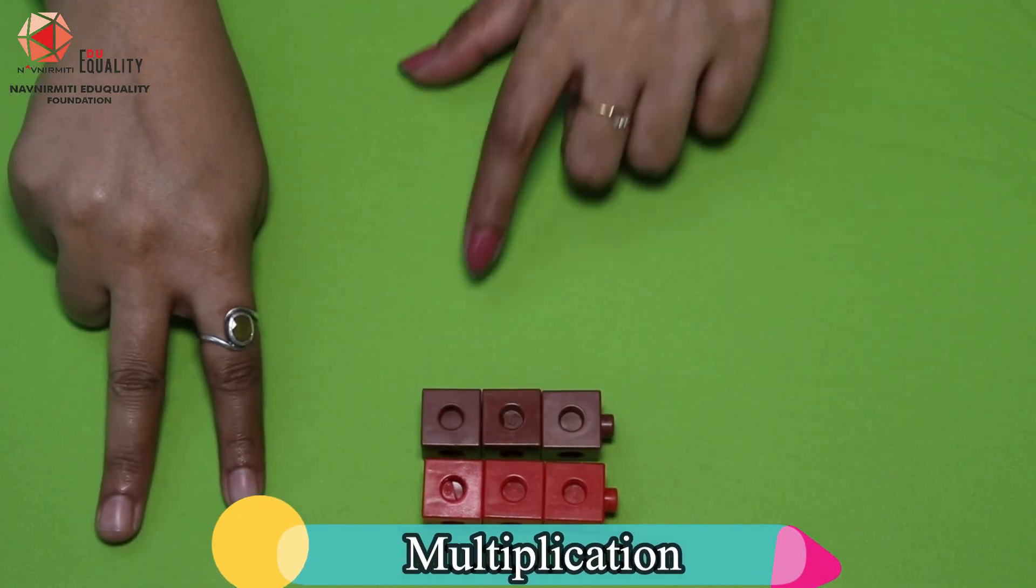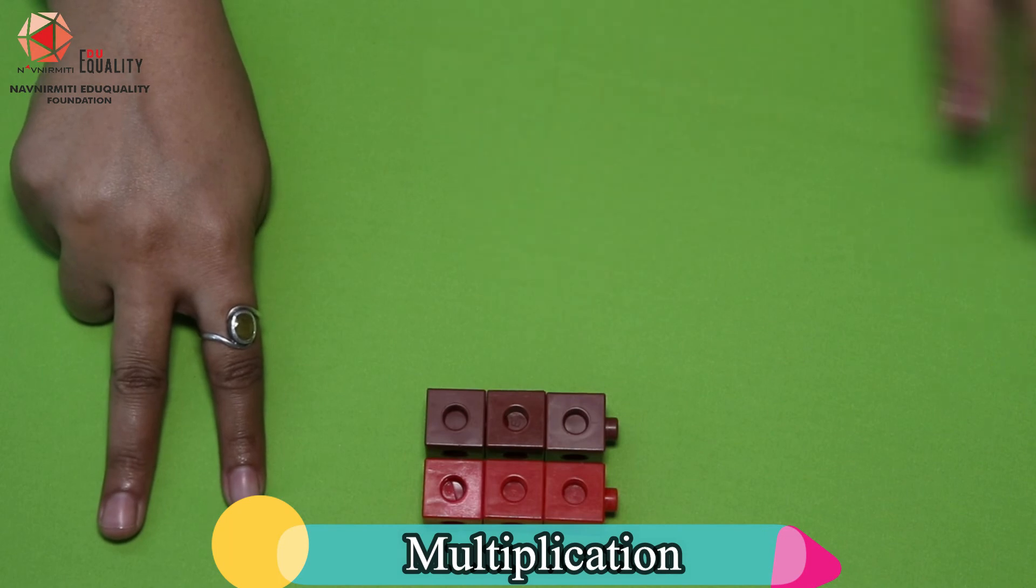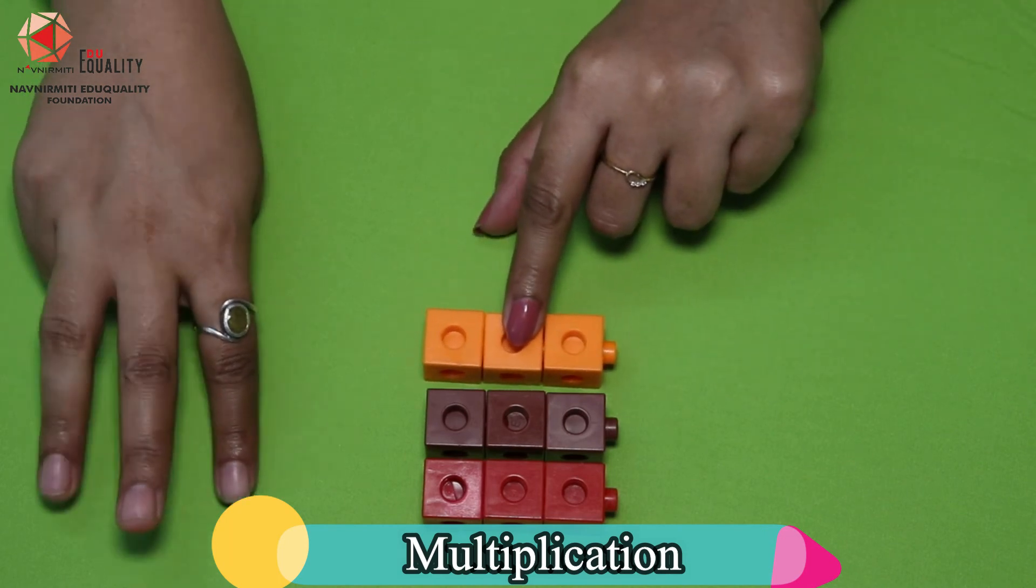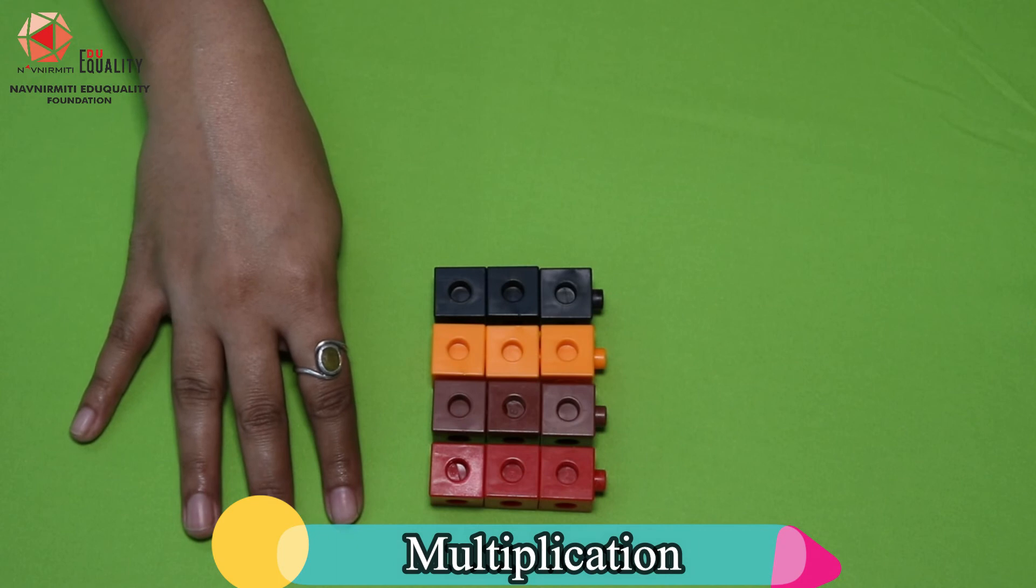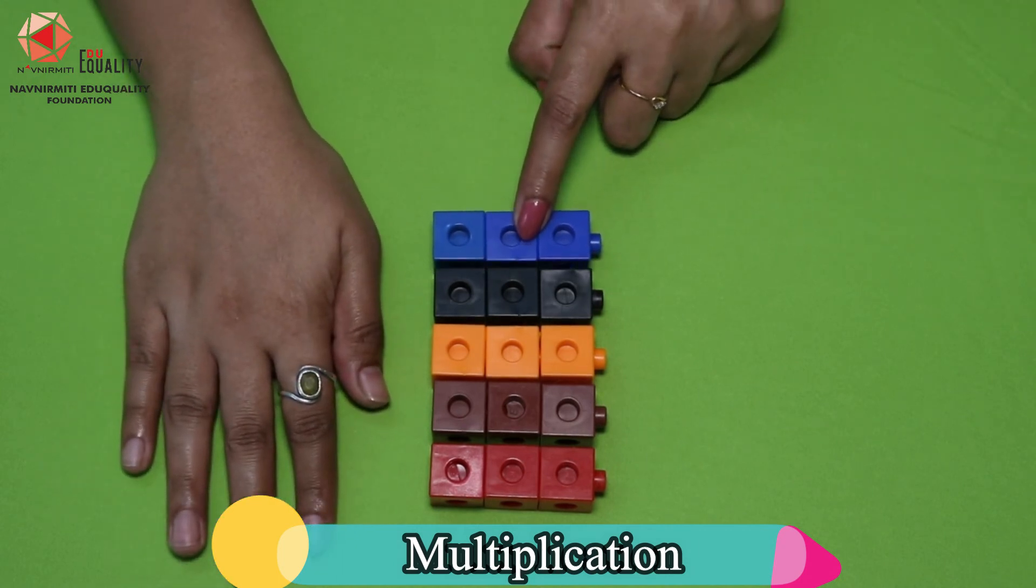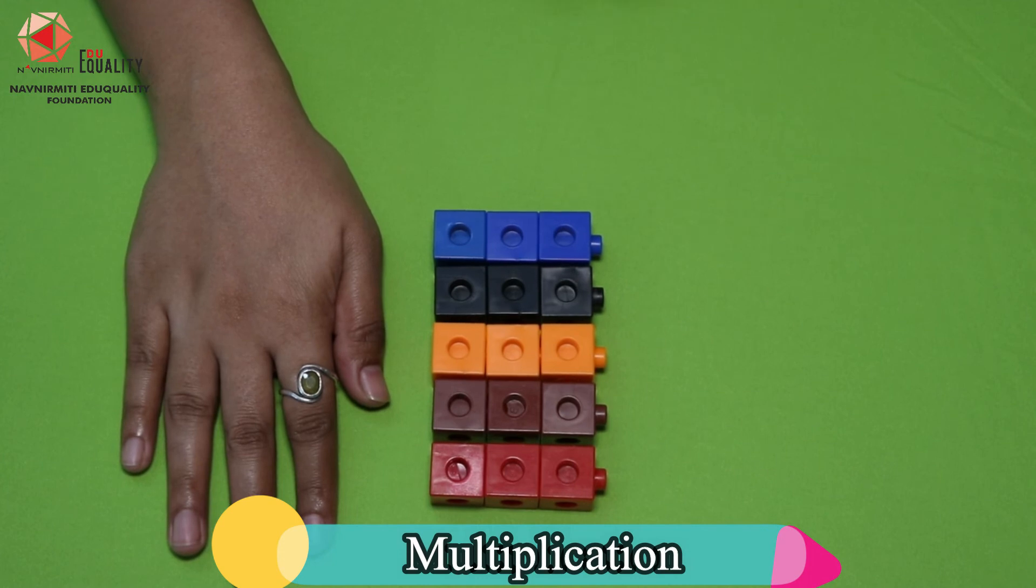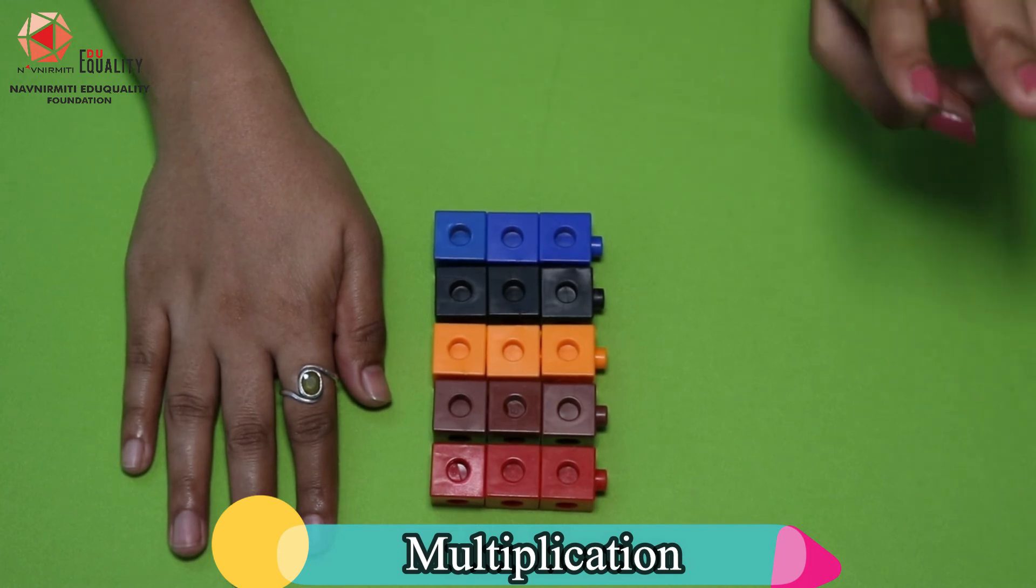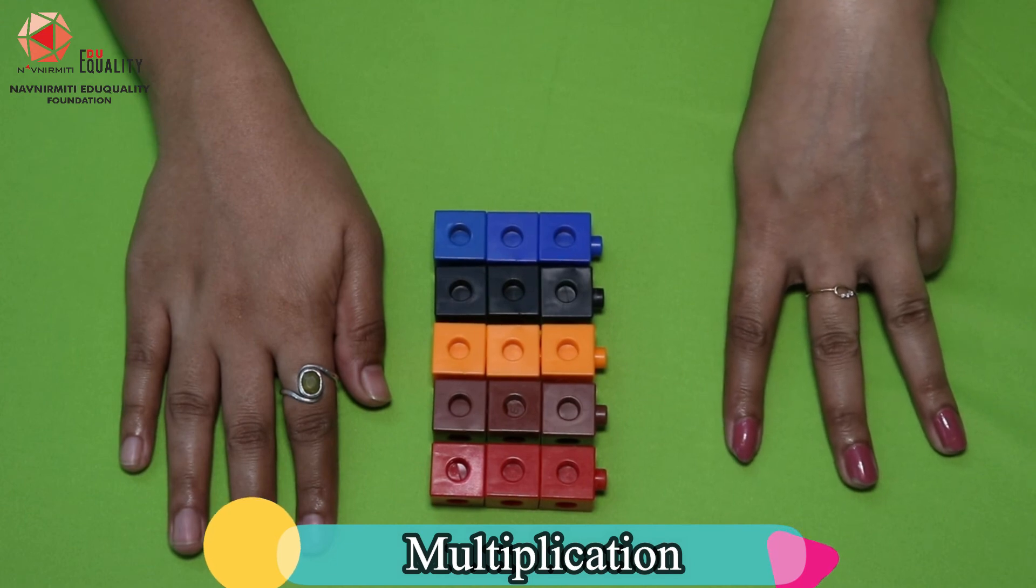3 taken 1 time, 3 taken 2 times, 3 taken 3 times, 3 taken 4 times, and 3 taken 5 times. So 5 times 3 equals 15.